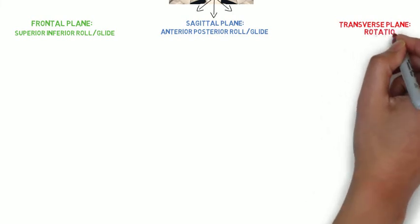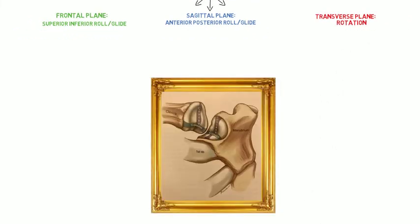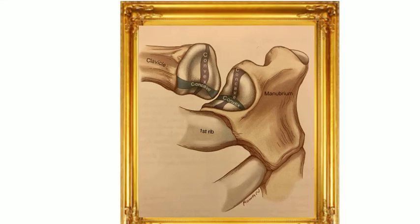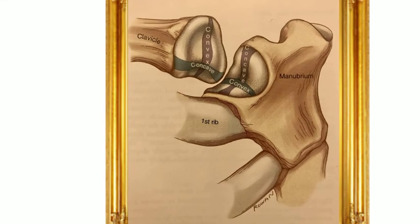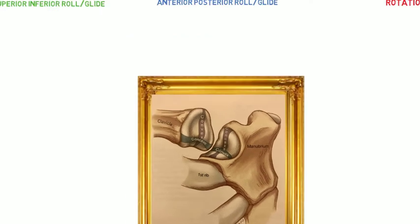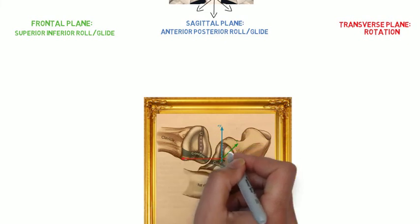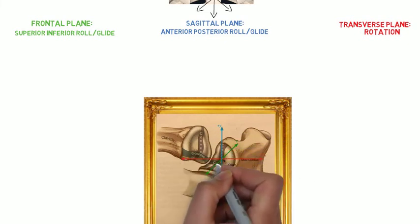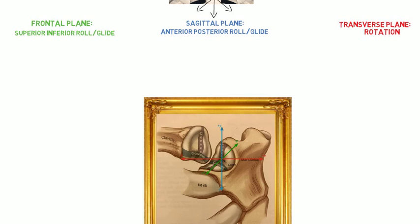The trick to understanding the sternoclavicular joint is to understand that each of the two joint surfaces, convexity and concavity, corresponds to the cardinal plane that it's located in. For instance, proximal clavicular convexity is associated with the frontal plane motion, while proximal clavicular concavity is associated with sagittal plane motion.